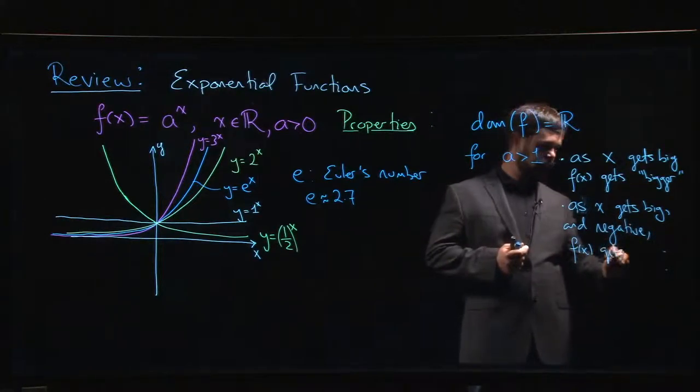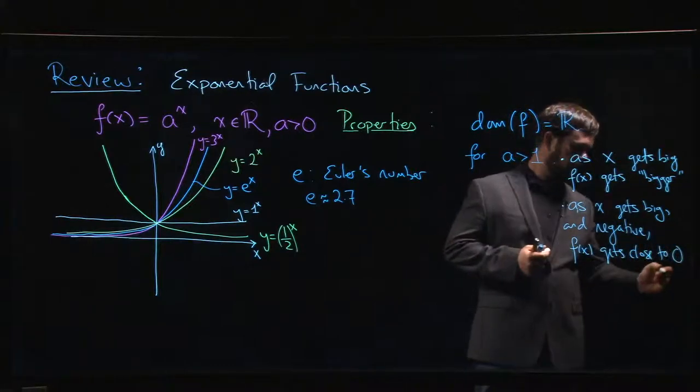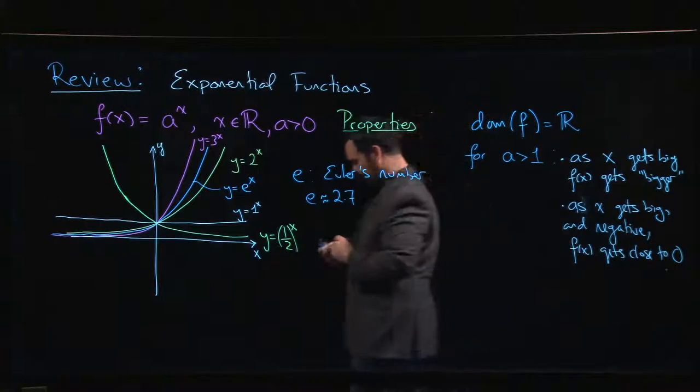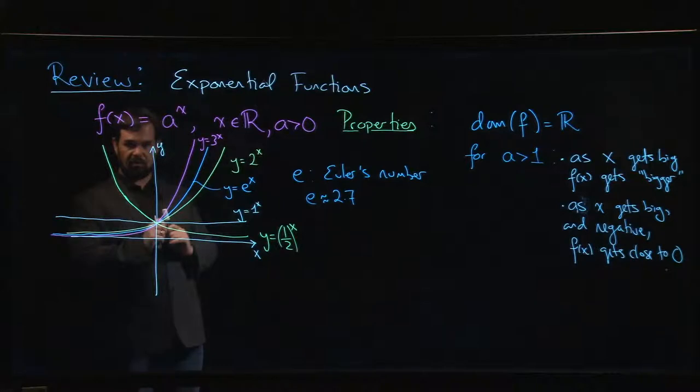f(x) gets close to 0. We have this idea of an asymptote. Once we have the language of limits, we can state this much more quickly and precisely.